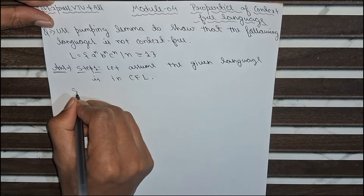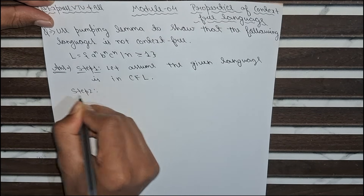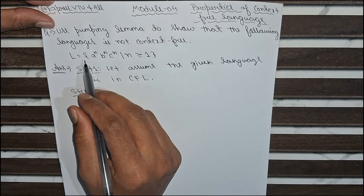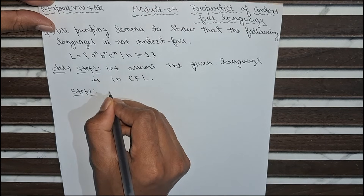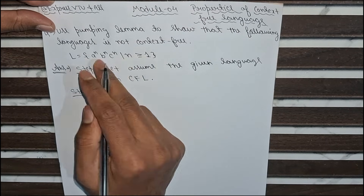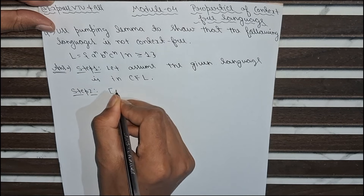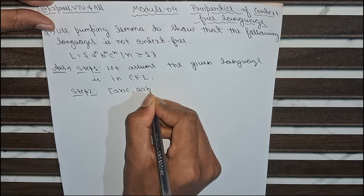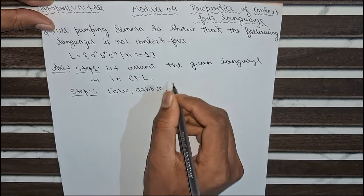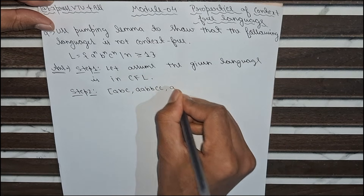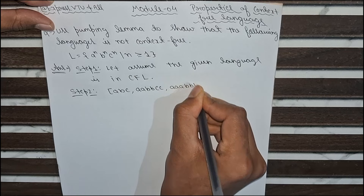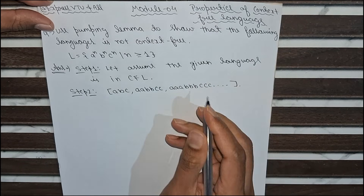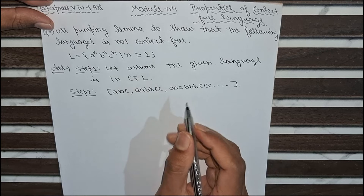Step 2 is to identify strings which can be made by this language. If you put n=1, this will be a, b, c. If you put n=2, it will become aa, bb, cc. If you put n=3, it will be aaa, bbb, ccc, and so on. So here we are putting the value of n equal to 3.